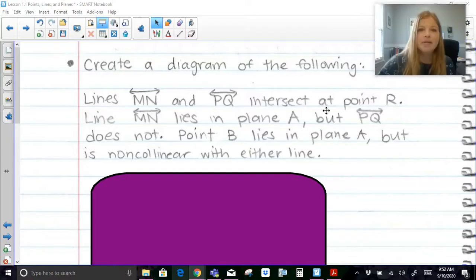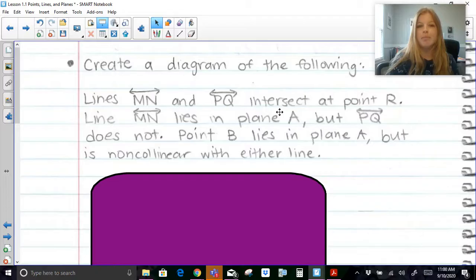Here it now says create a diagram of the following. I'm going to read this and I'm going to encourage you right now as I'm reading it to try to draw this diagram and press pause if you need to. Lines MN and PQ intersect at point R. Line MN lies in plane A, but line PQ does not. Point B lies in plane A, but is non-collinear with either line. I'm going to give you a moment to try to draw this diagram.